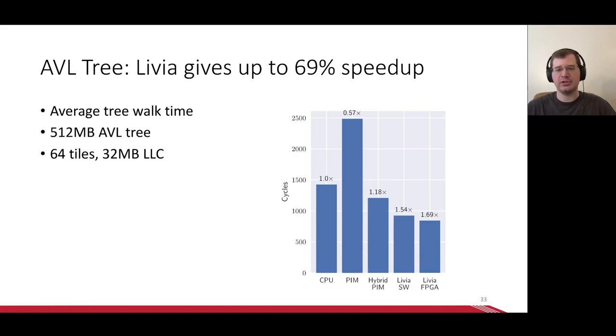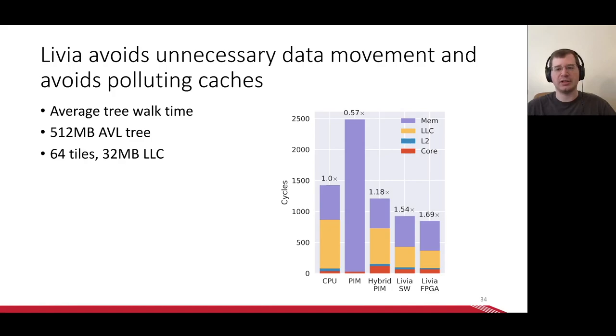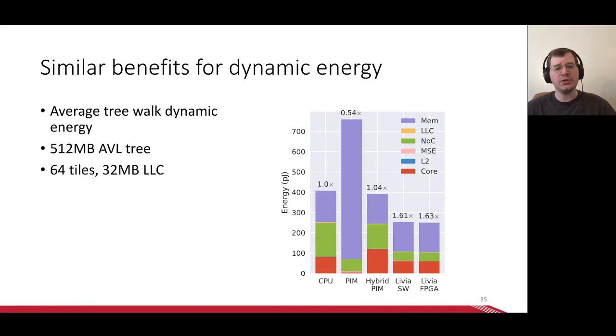Let's look at the latency breakdown to see where these speedups come from. Here, we've broken down the time to do a lookup into execution time and the time accessing the L2, the LLC, and memory. The breakdown confirms what we saw in the motivation. CPU spends a huge amount of time in the LLC, and while PIM avoids this, it produces a tremendous increase in DRAM accesses. Hybrid PIM produces a small improvement, but because it behaves like a CPU for data on chip, it doesn't help much. In contrast, Livia migrates tasks to the right LLC bank, halving network latency for the LLC.